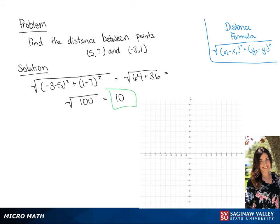We're going to graph these points. We have (5, 7) and (-3, 1). The graph shows that the distance between these two points is 10.